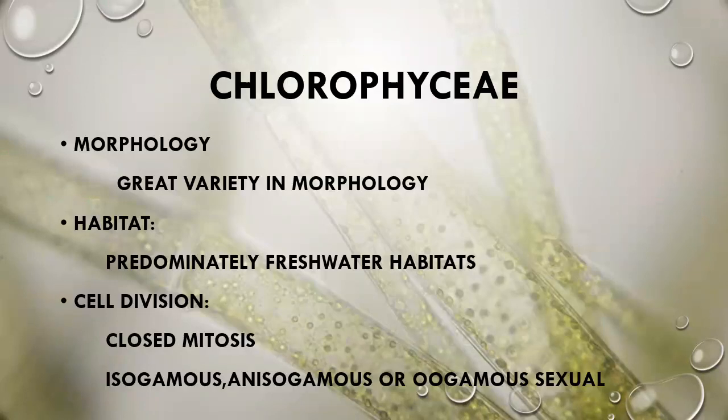Chlorophyceae: they have great variety in morphology. Habitat is mostly freshwater and marine. Cell division is closed mitosis. Isogamous, anisogamous, or oogamous sexual reproduction occurs in this type of algae species.